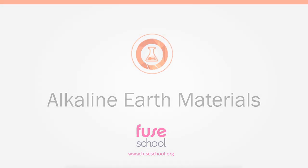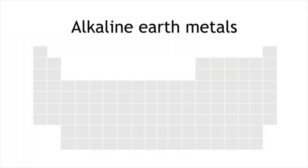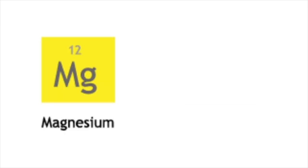In this lesson we will learn about the alkaline earth metals in group two of the periodic table. We will focus on magnesium and calcium and learn about how they react with oxygen and water and the products formed from these reactions.